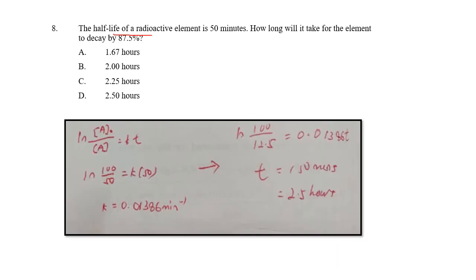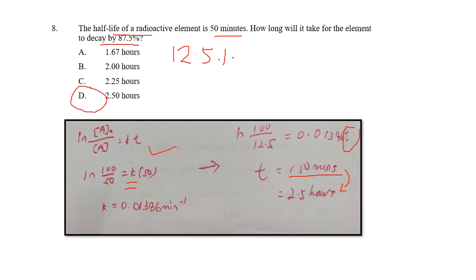Question eight: the half-life is 50 minutes. How long will it take for the element to decay by 87.5%, meaning 12.5% remains? First write down the formula, then calculate k using the half-life of 50 minutes. Then apply the integrated rate law with initial = 100% and remaining = 12.5%. Using k = 0.01386 per minute and solving for T gives 150 minutes; converting to hours gives 2.5 hours. The answer is D. Note: the unit for k is per minute.